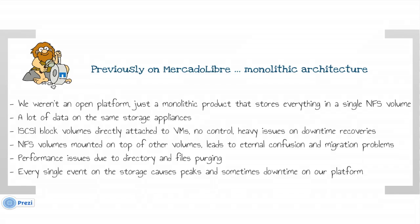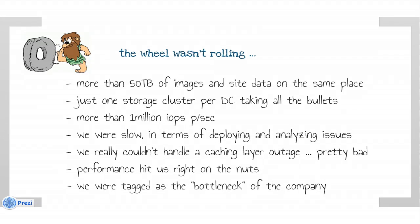We had data loss events and performance issues when pushing files, because we had millions of files stored in the same directory — this was out of control and seriously affected other applications stored on the same filer. Every single event on the storage side was affecting our platform, and we even had peaks and downtime because of that. By this time we had more than 50 terabytes of images and site data stored in the same place, with just one storage cluster per data center receiving more than 1 million IOPS per second.